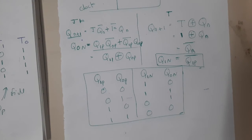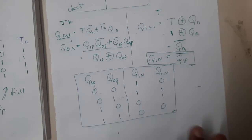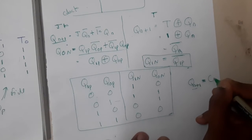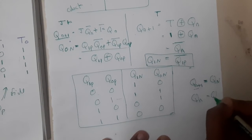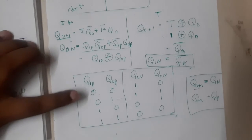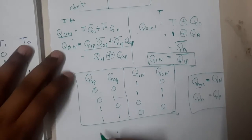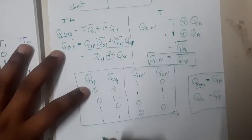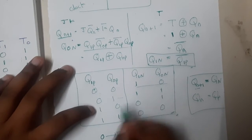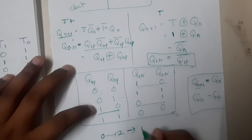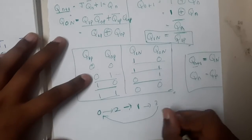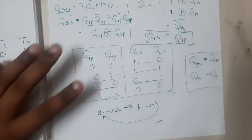Now let us read the counting sequence from the truth table. When both Q1 and Q0 are 0, the next state is 10 (binary 2). From 2 (10), the next state is 01 (binary 1). From 1 (01), the next state is 11 (binary 3). From 3 (11), the next state goes back to 0. So the counter sequence is: 0 → 2 → 1 → 3 → 0 → 2 → 1 → 3...